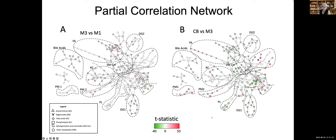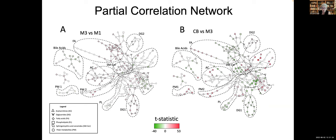It follows the convention I just showed you. We're comparing cord blood versus third trimester of pregnancy. You can see the changes in different classes of lipids, primary metabolites, bile acids and other compounds. These networks allow you to do some reasoning and begin to look and understand the biochemistry.